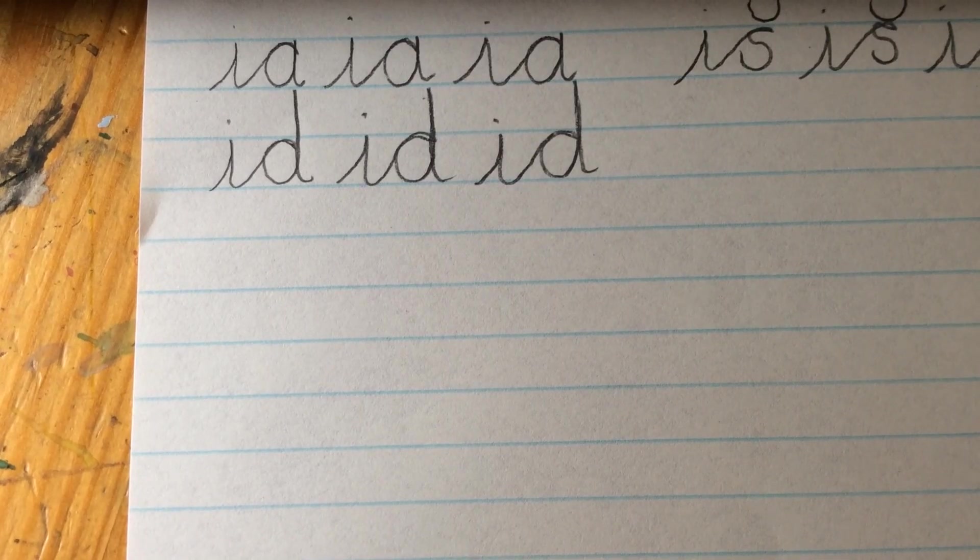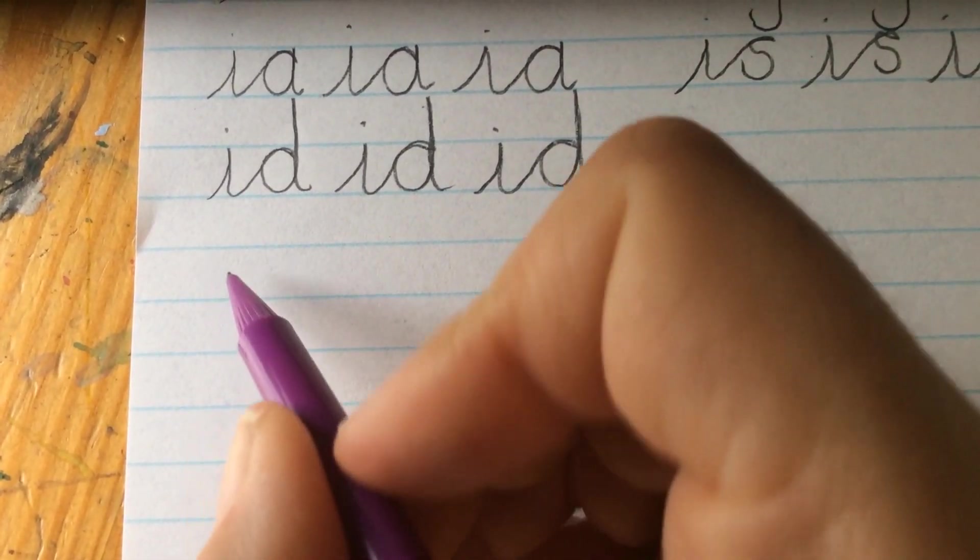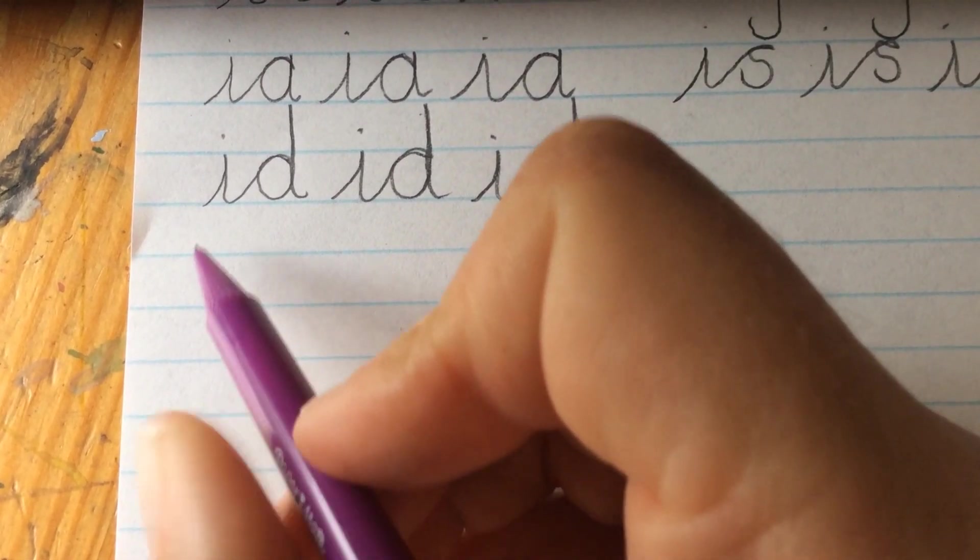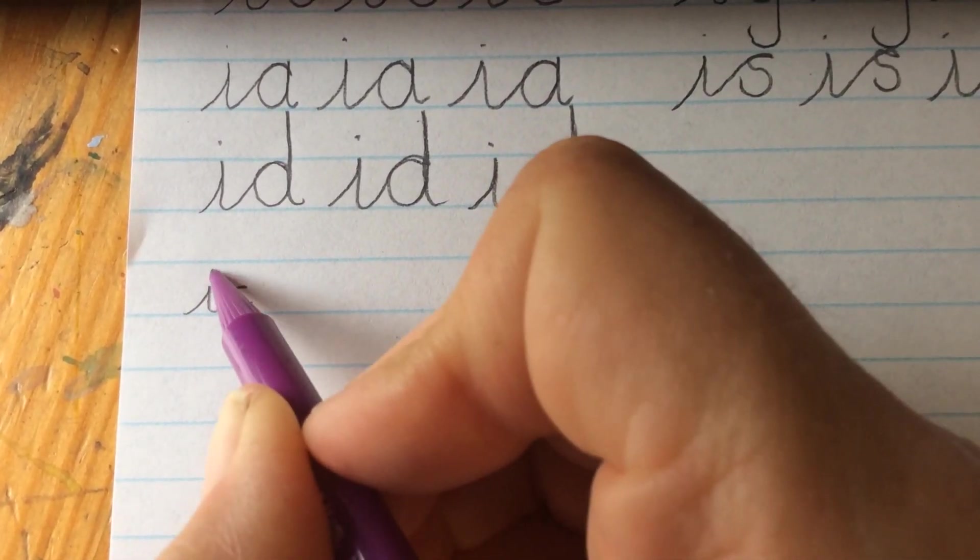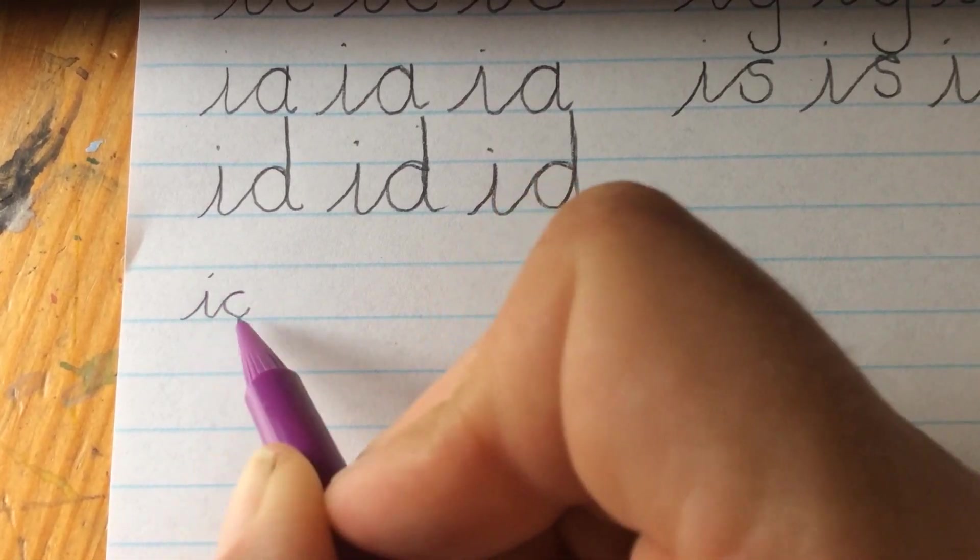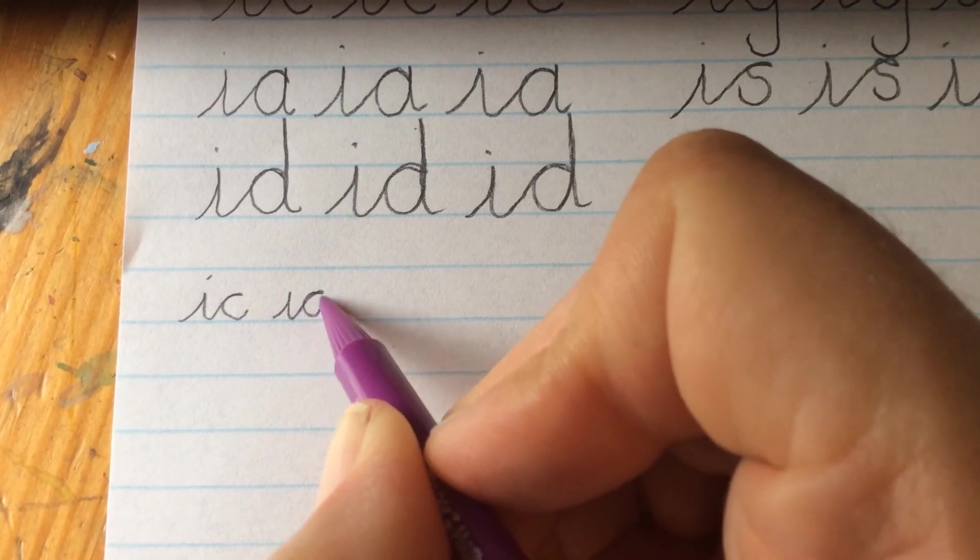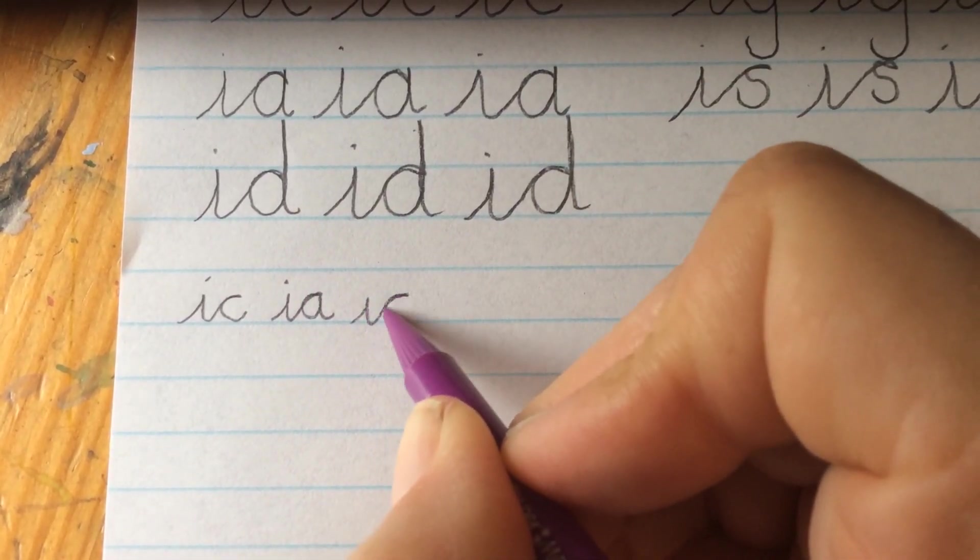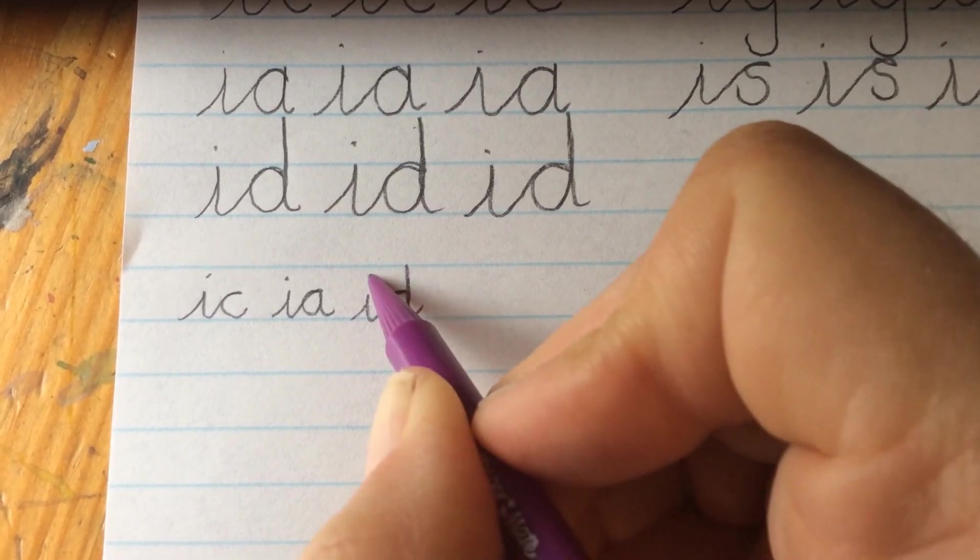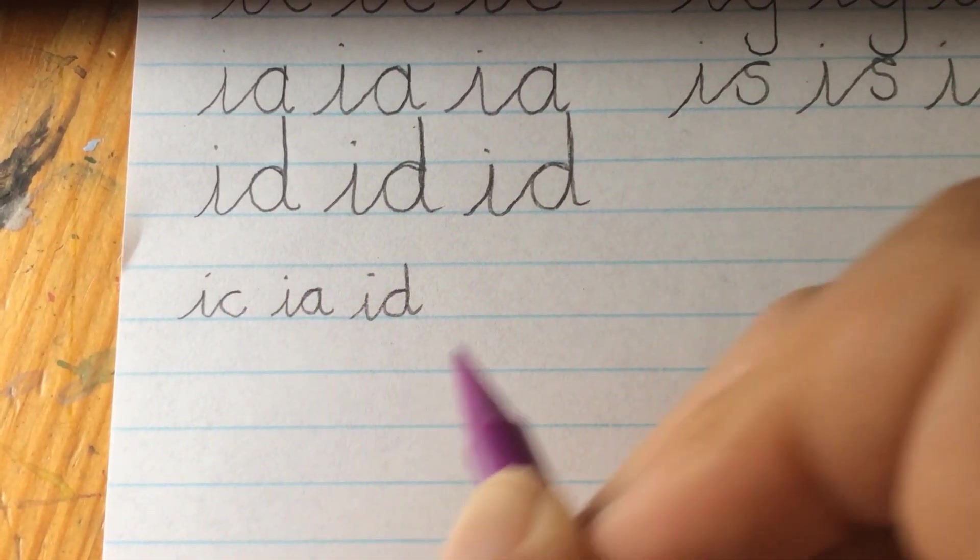When you've practiced and you're feeling more confident, then you can have a go at writing, confusing those letters with the correct sizing between the lines. Remembering at all times to keep those small letters, those counter letters, exactly the same height. The d goes up to the top, the round bit of the d is the same height of the letter a and the letter c.